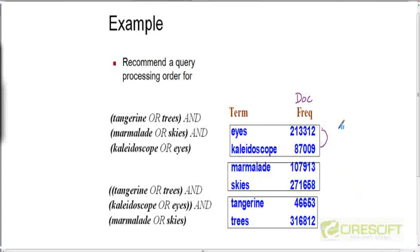Basically, if the sum of these two is the smallest, the sum of these two is the next smallest and the sum of these two is the largest among these three pairs. So because this is the smallest and this is the second smallest, we are going to do eyes or kaleidoscope anded with tangerine or trees. So I've parenthesized these two terms over here. We're going to take this AND operation first and then we are going to do this particular AND operation. Is that clear to everyone?